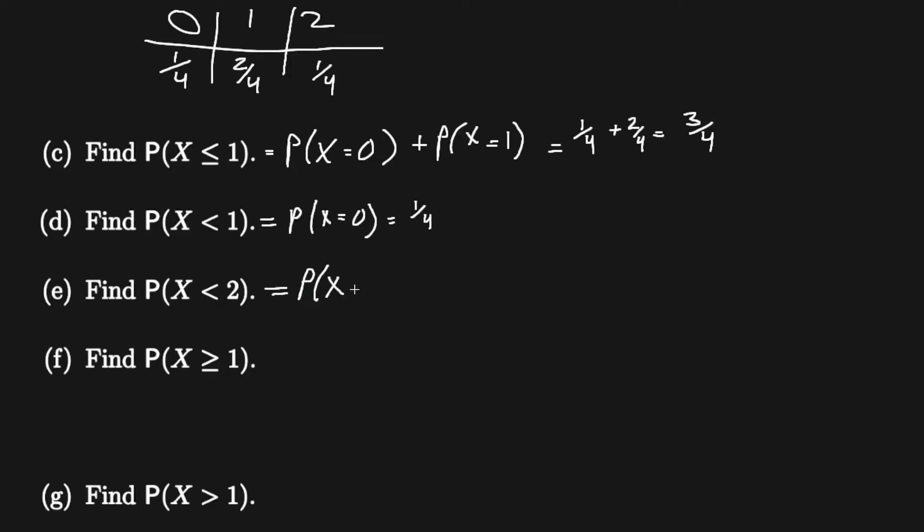Now we can see that the probability of X less than two is the probability of X equals zero and X equals one, which is the same thing as part c, which is just three fourths.